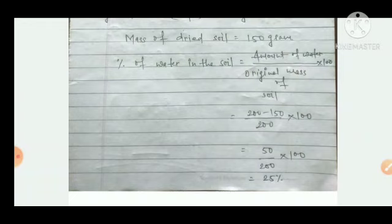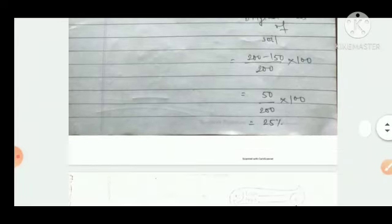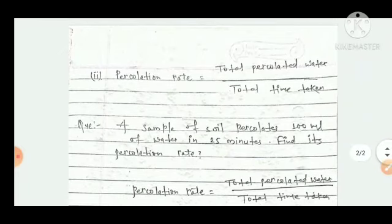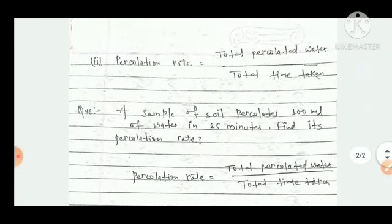As we solve it, we will have 25 percent. And the second numerical term that we have is how to find the percolation rate of soil.